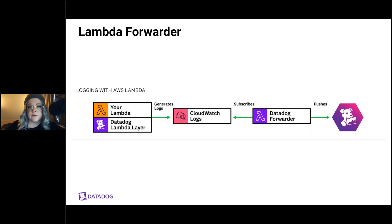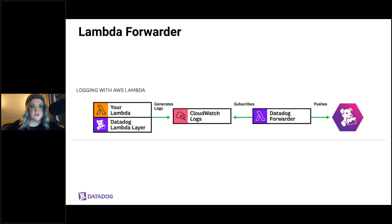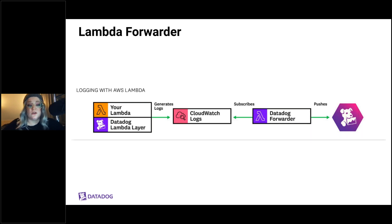Because the forwarder is a Lambda function, it relies on triggers to execute. You can let Datadog automatically set these up, or manually set them to forward data as soon as it's added to S3 buckets or CloudWatch log groups. Lambda functions generate a large volume of logs, making it difficult to pinpoint issues. You can use Datadog's log patterns to surface interesting trends — for example, using them to quickly search for the most common types of errors when you notice a spike.